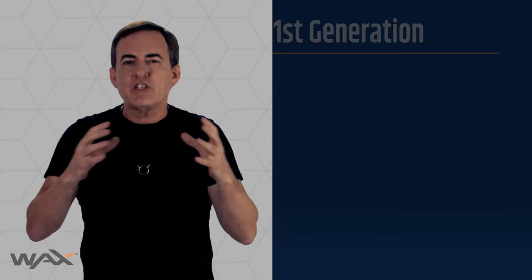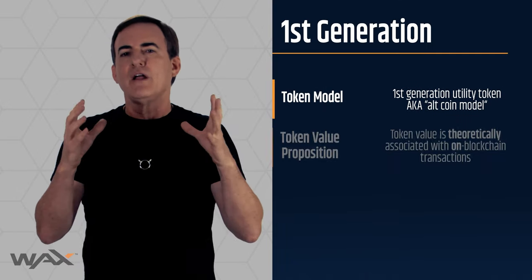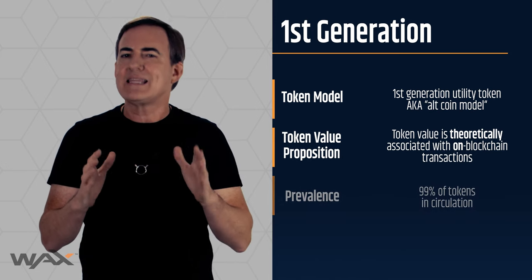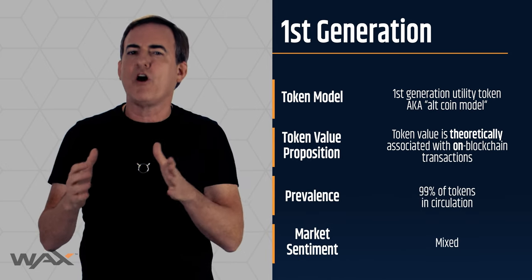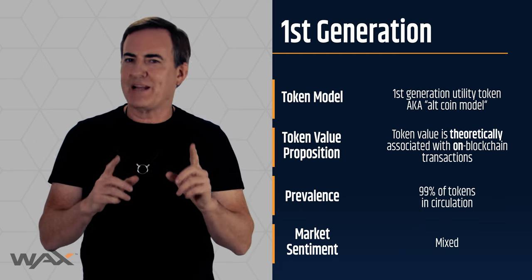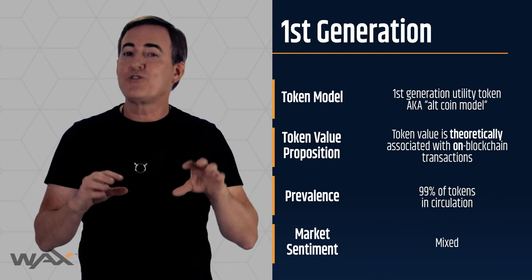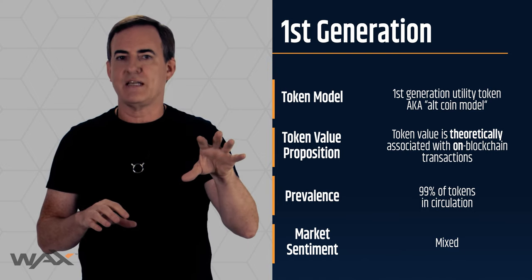I'd summarize this first-generation economic model as follows: the token value is theoretically associated with on-blockchain transactions. I said theoretical because there is no direct link between the blockchain transactions and the value of the token, and nearly all utility tokens are based on this economic model.